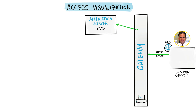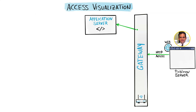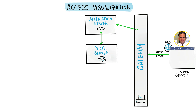The gateway forwards the request to the application server, which starts rendering the chrome around the viz — all those icons and images that are not inside the dashboard itself. Then the application server says: this is about visualizations, which is completely out of my league. We have to forward this request to the master, the brain — the VizQL server — which is the one that deals with visualizations.